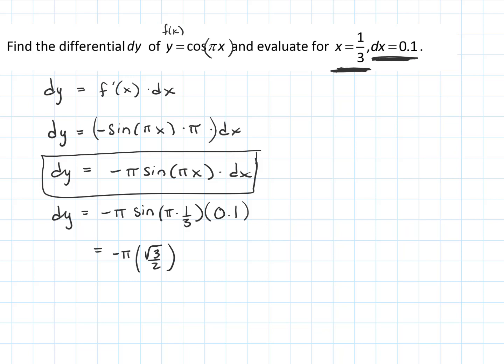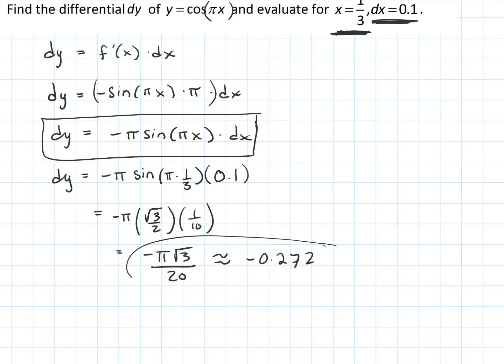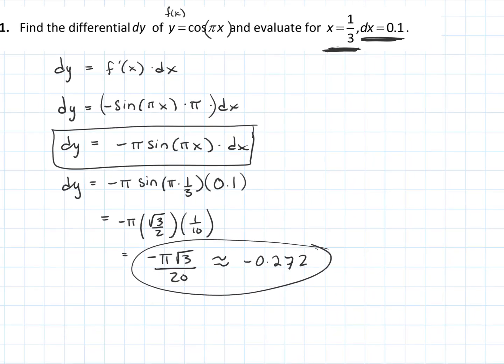So dy equals negative π times root 3 over 2, times one-tenth — that simplifies to negative π root 3 over 20, which is approximately negative 0.272. So we have both the exact form and the decimal approximation for that differential dy evaluated at that specific point.